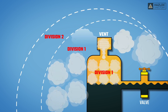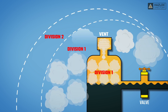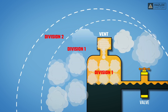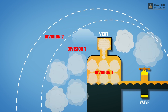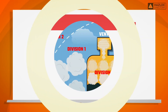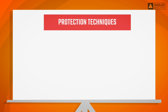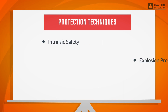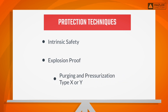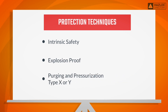In order to be certified as compliant with safety standards for Class 1 Division 1, the product must be protected by one or more of the following three protection techniques: intrinsic safety, explosion proof, and purging and pressurization, type X or Y.